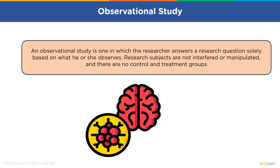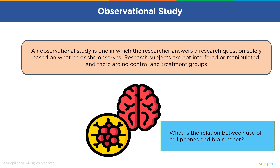Let's try to understand this with the help of an example. Suppose researchers investigate the link between the use of cell phones and brain cancer. There are two variables in this study: one is the extent of the cell phone usage, and the second one is whether the person has had brain cancer previously or not. Both variables are measured for the group of people. This is an observational study — there was no attempt to influence people's cell phone usage to see if different levels of usage made any difference in whether or not subjects developed brain cancer.